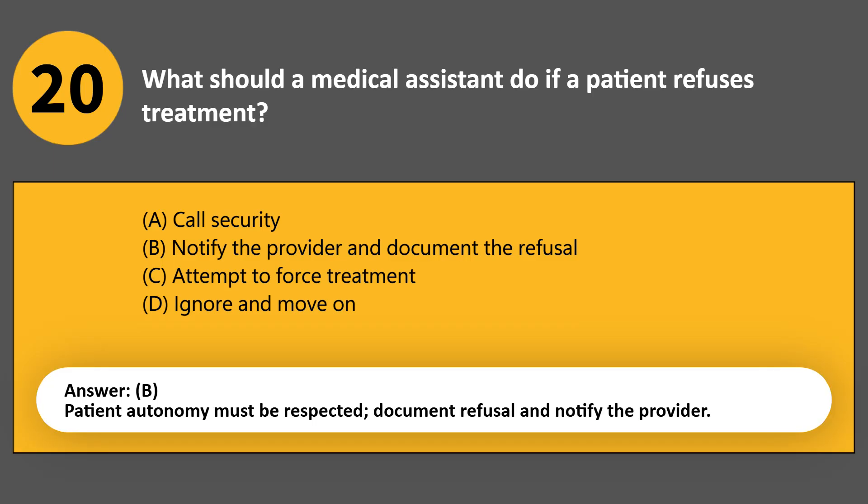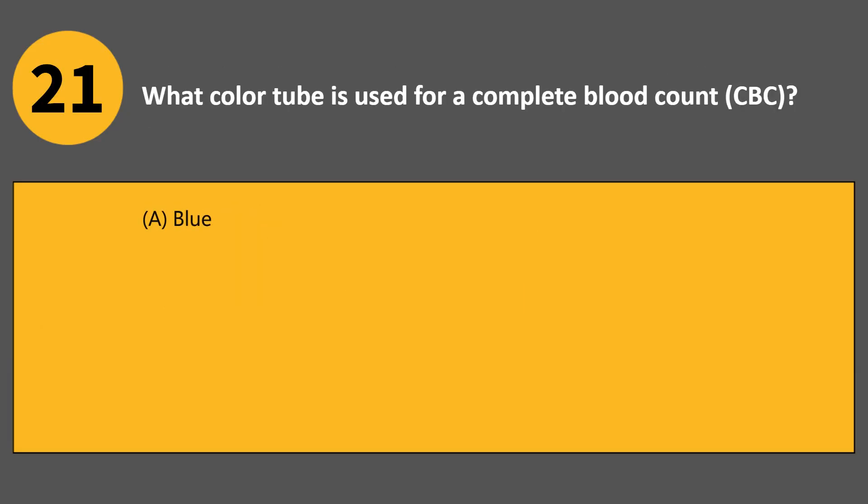What color tube is used for a complete blood count (CBC)? A. Blue. B. Green. C. Red. D. Lavender. Answer D. A lavender top tube with EDTA is used for CBCs.